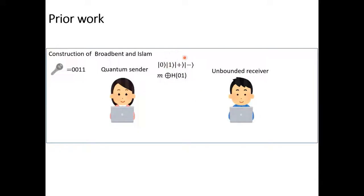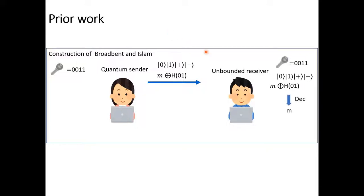These are the quantum ciphertexts of their construction. Then, she sends them to the receiver. We remark that if the receiver has a secret key, he can obtain the message m correctly. This is because the secret key is the information of the basis of these quantum states. Therefore, he can obtain 0 and 1 by measuring these quantum states in the computational basis, and he can decrypt m by computing H of 0 and 1.